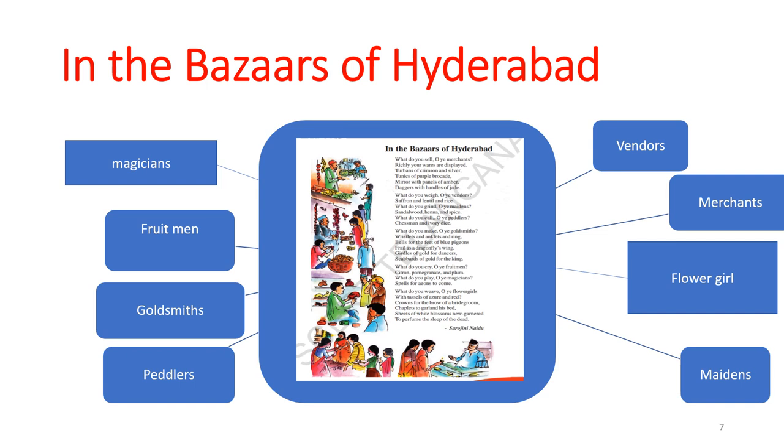Look at the concept map of the poem In the Bazaars of Hyderabad. Centrally I kept the poem and different people involved in the poem I kept around it. What are the materials do they sell, you keep writing in your notebook. Vendors, merchants, flower girl, maidens, magicians, fruit men, goldsmiths, peddlers. Peddlers, what do they sell? Goldsmiths, what kind of ornaments do they do? Fruit men, what are the fruits do they sell? Magicians, what do they do? All these activities you write in your notebook.